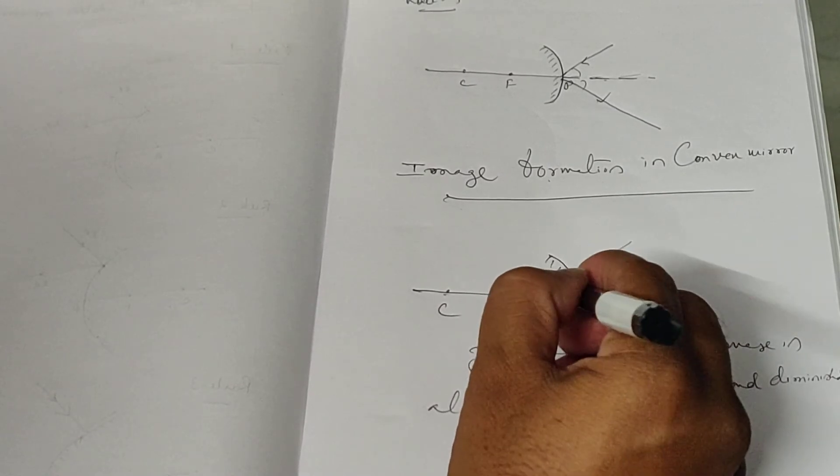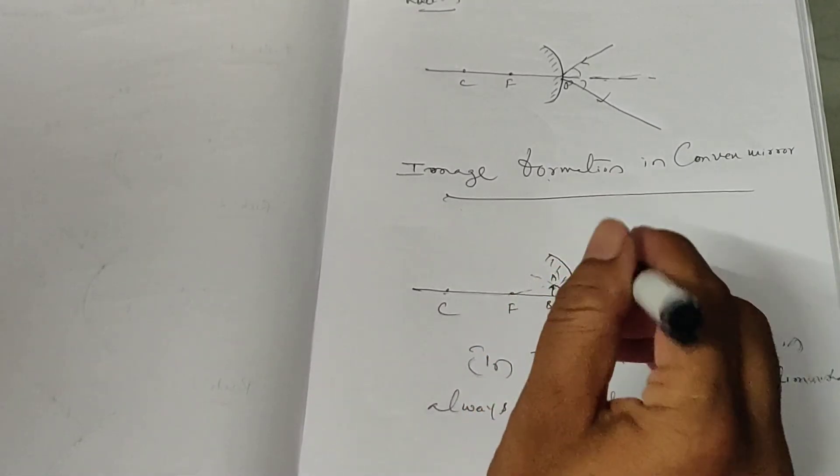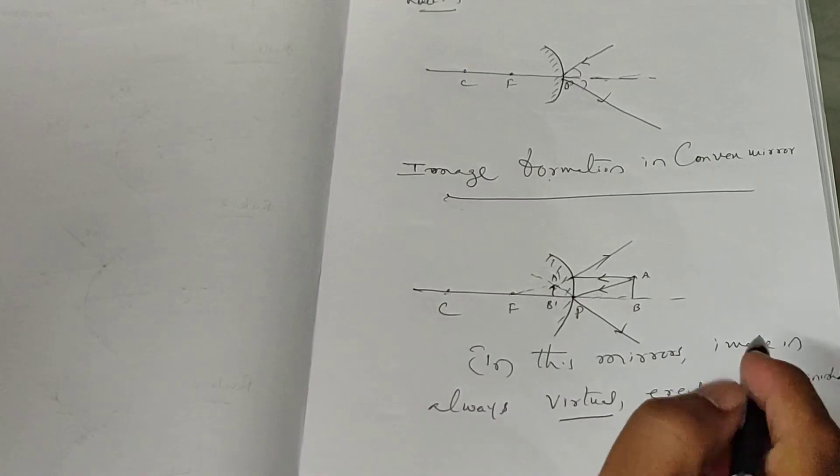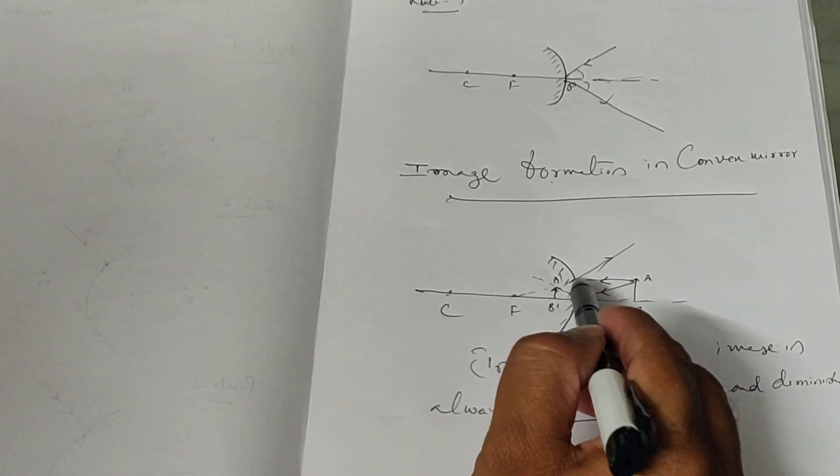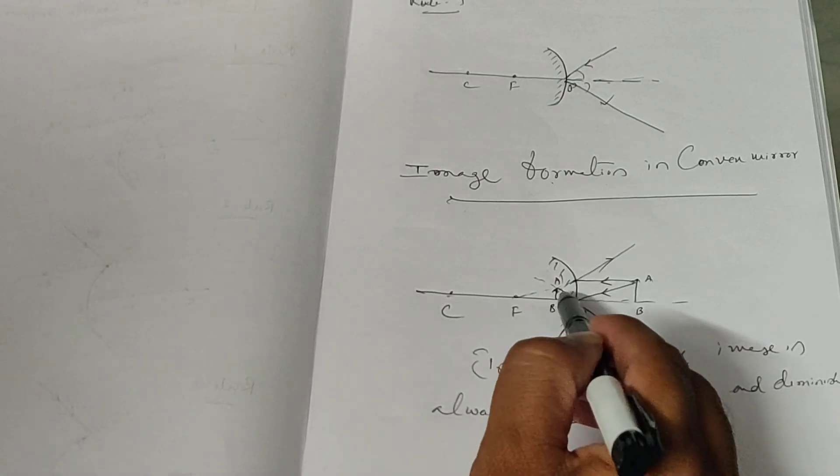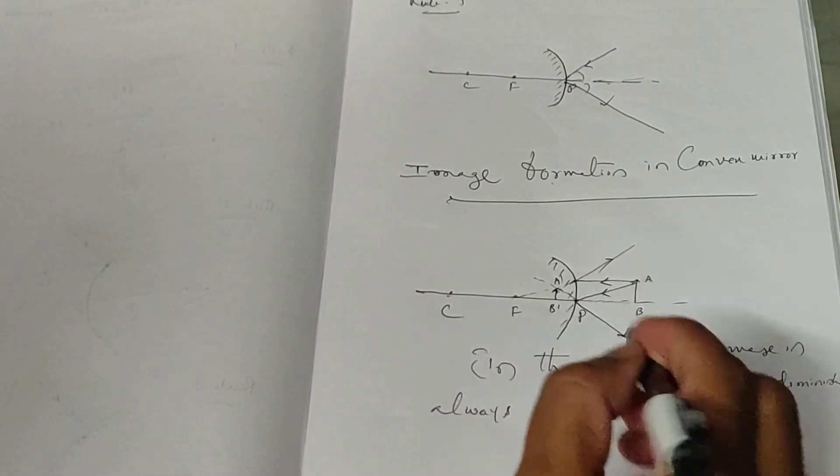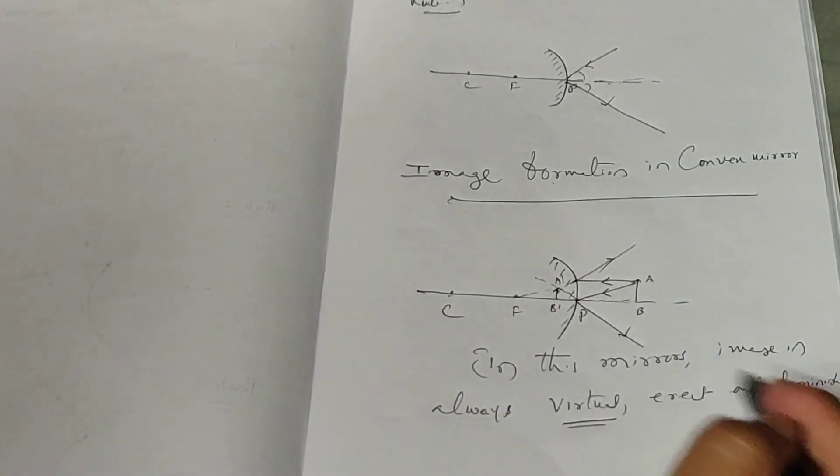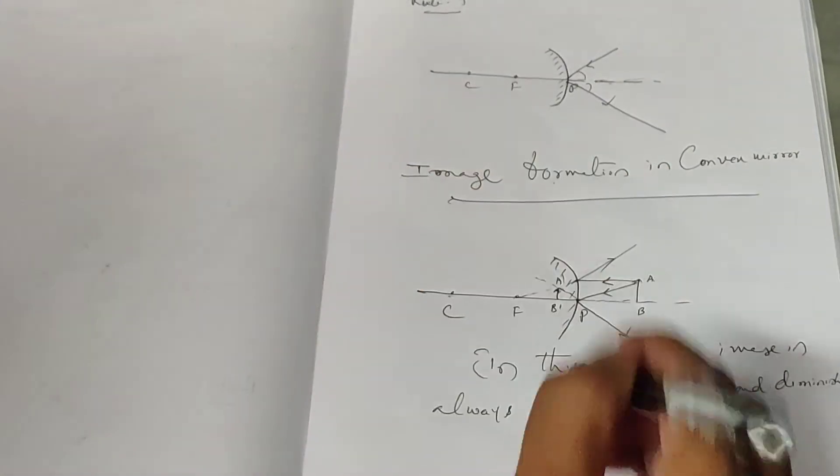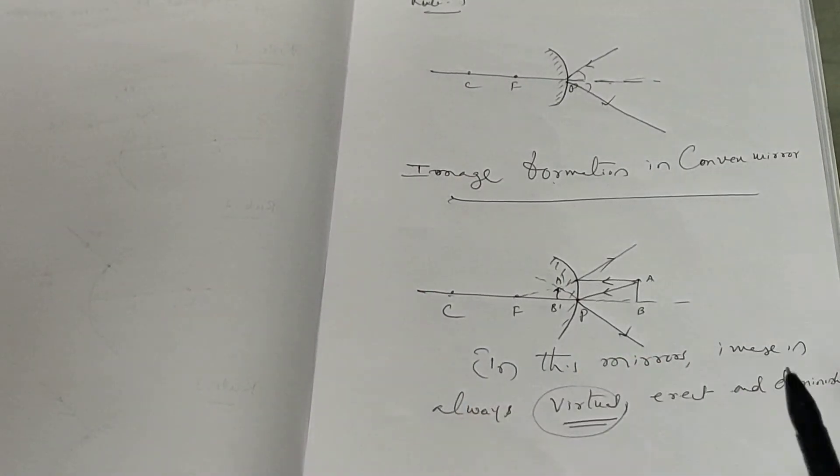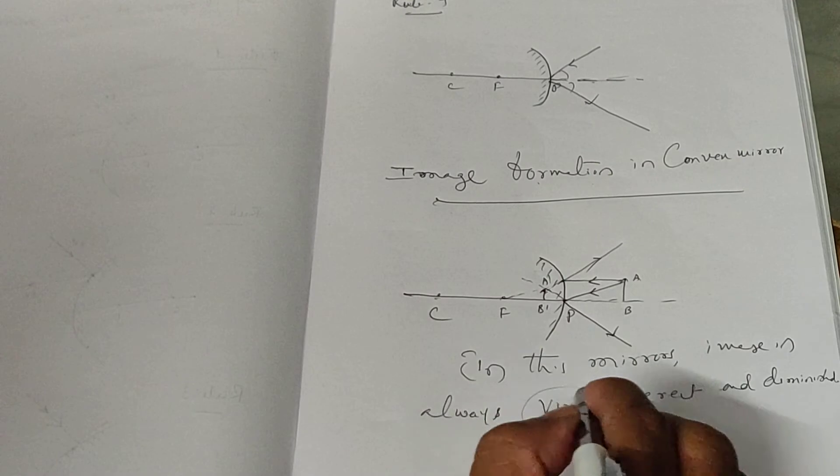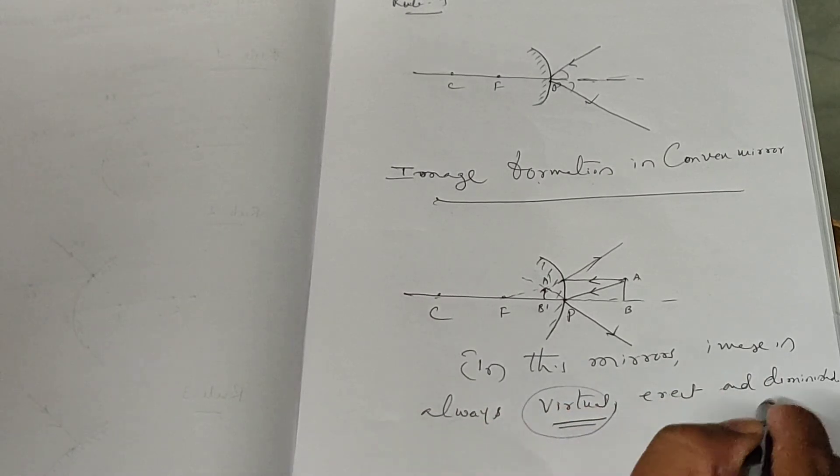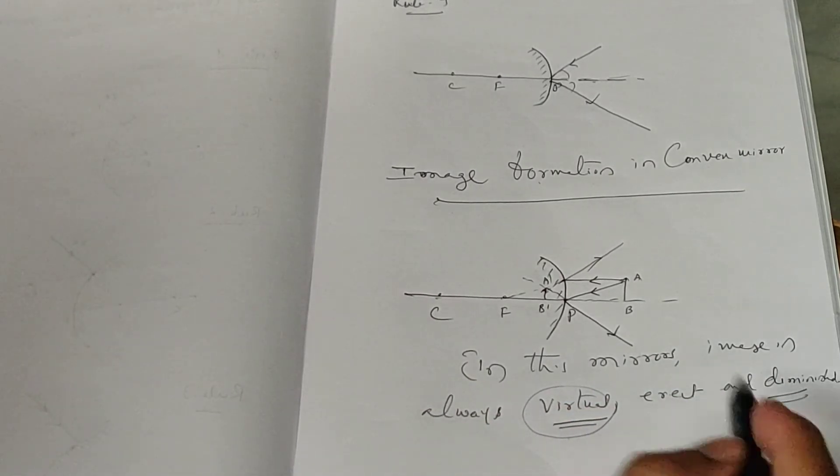The image is always virtual in the sense that virtual means the image is formed because of the extended light rays being intersected here. Any image formed behind the mirror will be called virtual. The image formed before the mirror will be real, and if the image is formed behind the mirror, that will be virtual. Therefore, in this mirror, the image is always virtual, erect, and diminished.